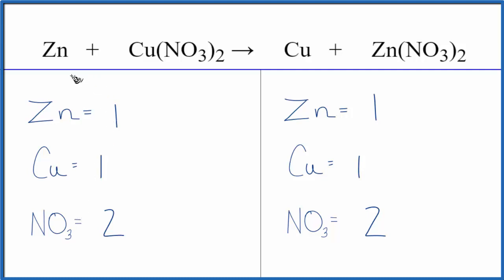And this is Dr. B with the balanced equation for Zn plus Cu(NO₃)₂—zinc plus copper(II) nitrate. Thanks for watching.